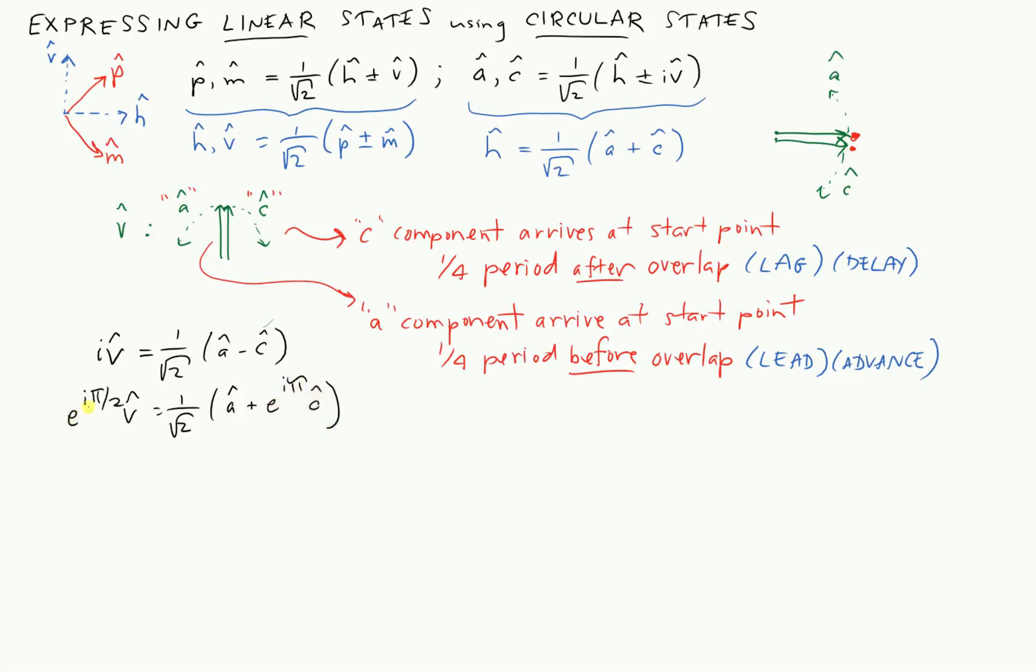So now, if I just multiply both sides by e to the minus i pi over two, I'll get the v hat alone over here. I'll get one over root two, and look what I get. I get e to the i pi over two c hat. I'll take the c hat term first. Plus, since I'm multiplying by e to the minus i pi over two, the a hat will pick up a factor of e to the minus i pi over two. For the c hat term, because I have an e to the i pi and e to the minus i pi over two multiplying it, that's why I got this term.